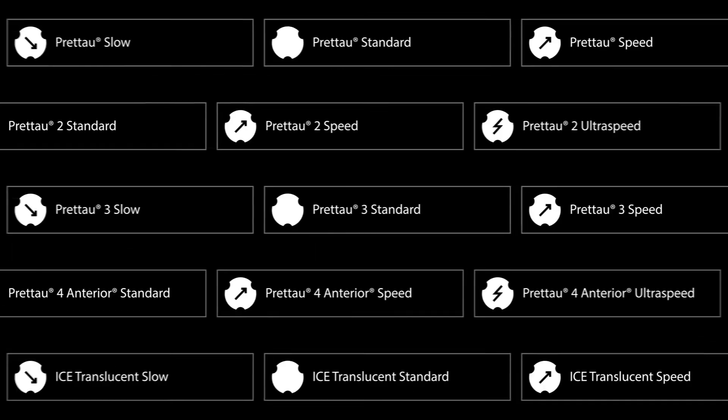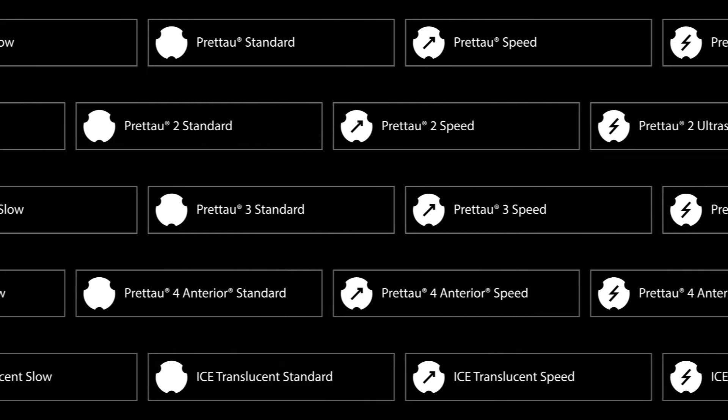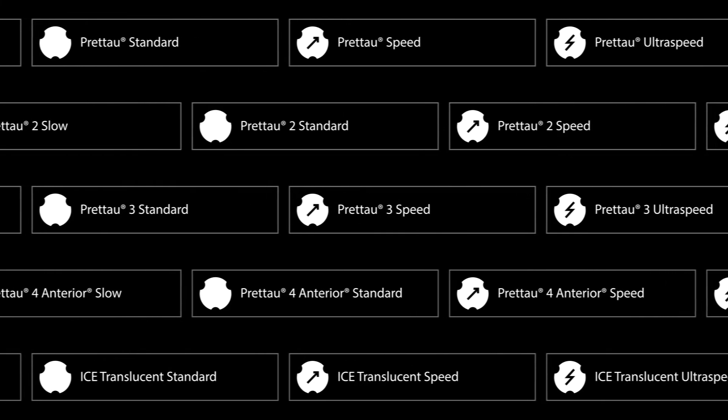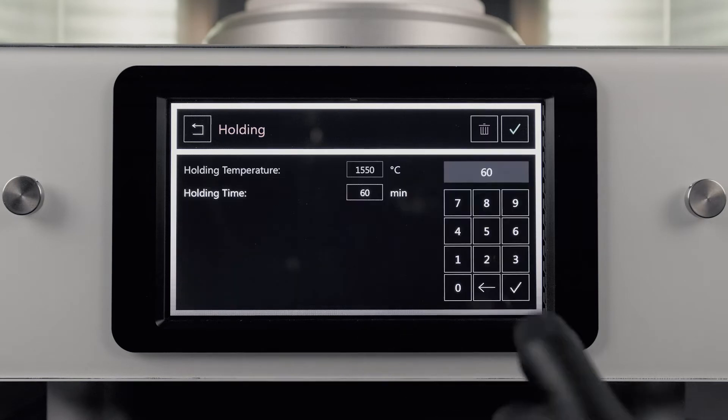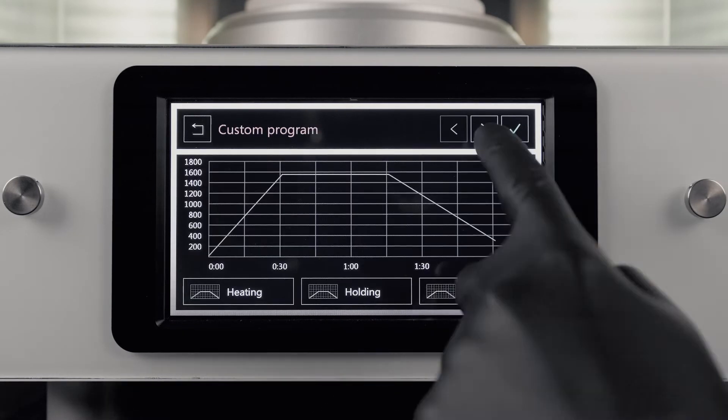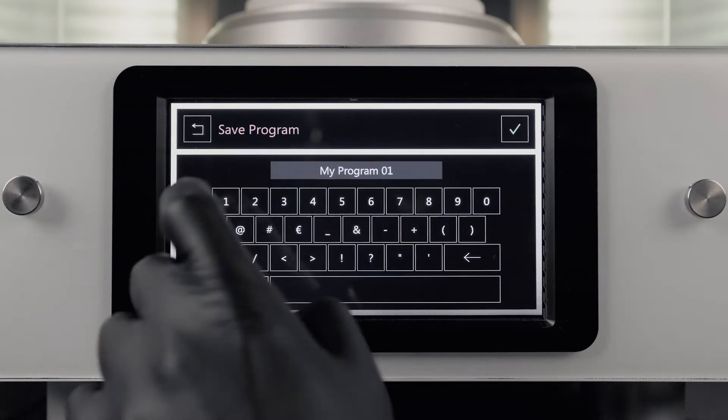The furnace is preloaded with several sintering programs for each of our zirconia types. However, if the predefined programs are not enough, or specific heating rates are required, it is also possible to create your own sintering program.